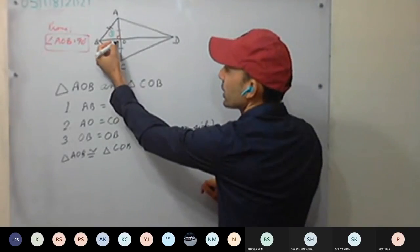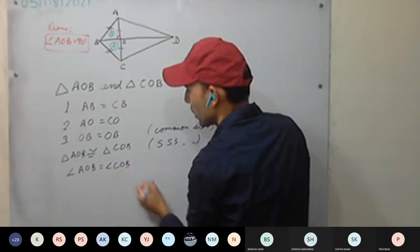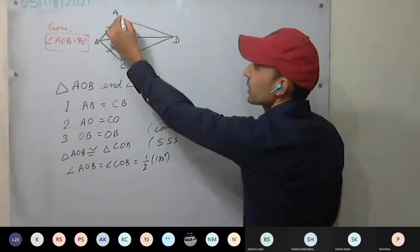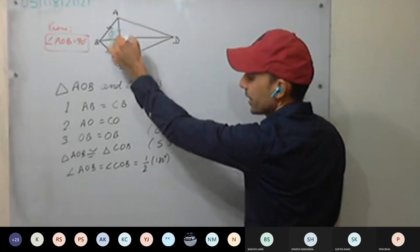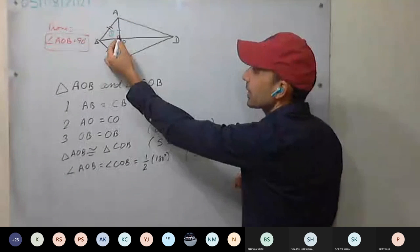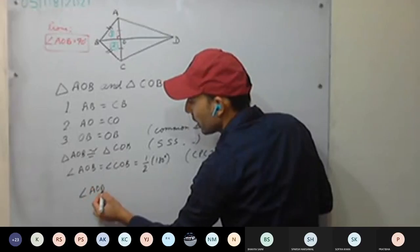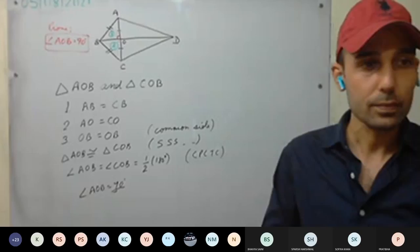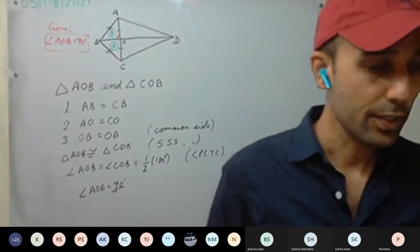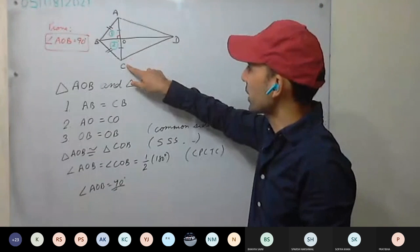We have proved them to be congruent. But what we need: we need to prove these two angles are equal. Therefore, angle AOB equals angle COB — by CPCTC. Both are equal and both will be equal to half of 180 degrees, that is 90 degrees, because AOC is a straight line. Therefore we can prove angle AOB equals 90 degrees. Now the second part: triangle AOD and triangle COD.